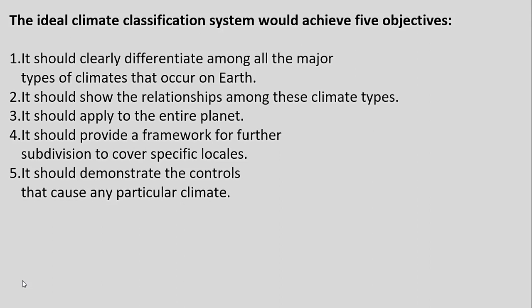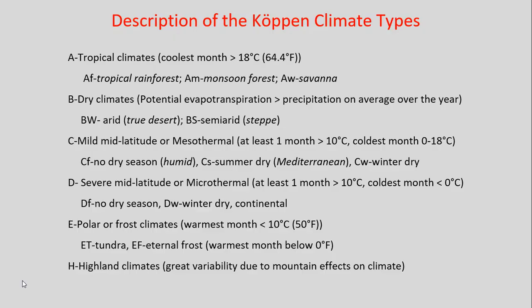There are a variety of different climate classifications developed over time. The one we're focusing on — one of the most popular used in geography and environmental sciences — is known as the Köppen classification system. It includes tropical climates, dry climates, mid-latitude or mesothermal climates, higher latitude microthermal climates, polar climates, and highland climates, each with their own letter designations.